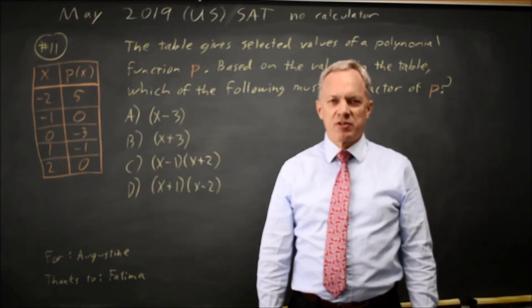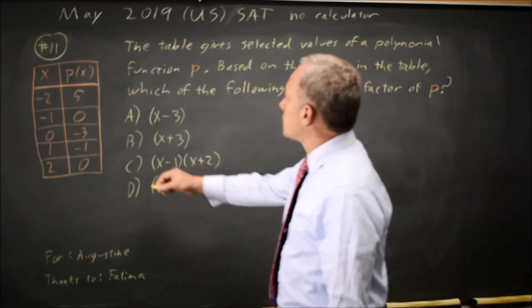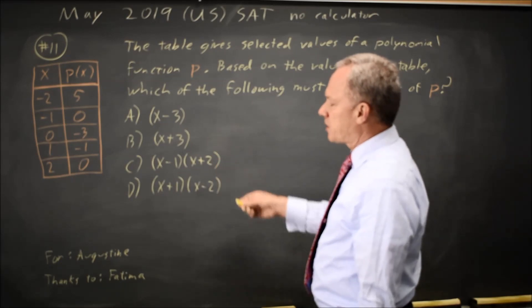This is calculator question number 11 from the May 2019 U.S. exam. College Board gives us a table of values for a polynomial, and they ask which of these must be a factor.